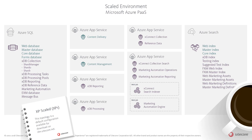There's also a default scale topology labeled XP Scaled, available for download both for on-premise and Azure PaaS deployments. For Azure installations, the XP Scaled ARM templates group selected web roles on shared app service plans, thereby sharing resources between the grouped roles.